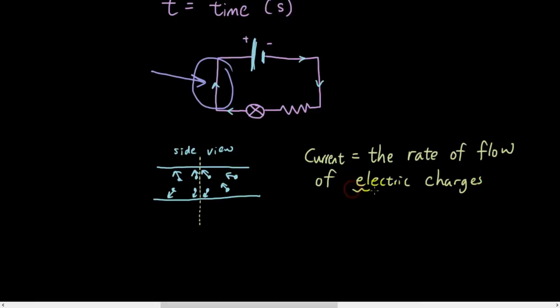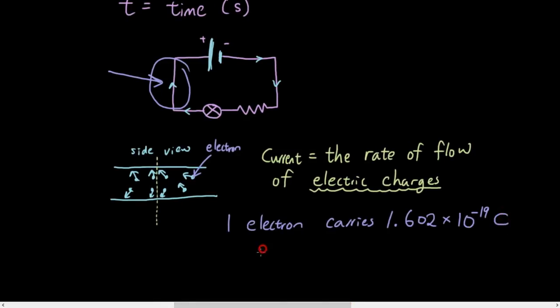If you can imagine all of these electrons, these things are electrons, these things are all electrons, and one electron carries 1.602 times 10 to the power of negative 19 coulombs of charge.